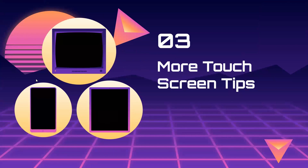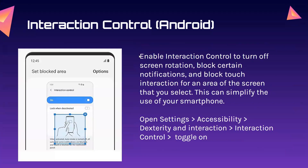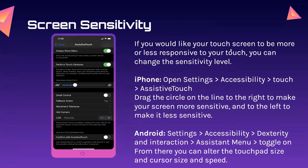Lesson three: more touchscreen tips. Screen sensitivity. If you would like your touchscreen to be more or less responsive to your touch, you can change the sensitivity level. For iPhone, open Settings, go to Accessibility, then Touch, then move to Assistive Touch. Track the circle on the line to the right to make your screen more sensitive, and to the left to make it less sensitive.